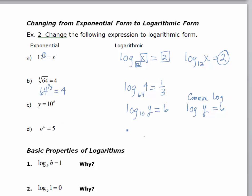For e to the x equals 5, similar scenario. I write the word log. The base is e, the exponent is x, and the argument is 5. But when the base is e, we use that special word ln. So ln of 5 is equal to x. Remember, ln is the same thing as saying log base e, and writing log with no base, it's implied that it's 10.